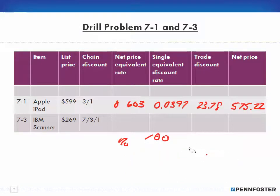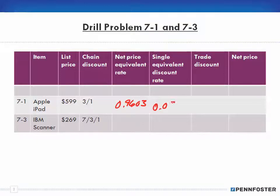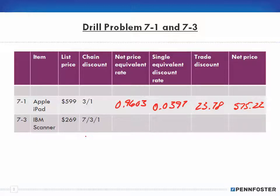I didn't want to erase those values, but that's okay — I'll write them back in. That was 0.9603, 0.0397, twenty-three dollars and seventy-eight cents, and the net price was five hundred seventy-five dollars and twenty-two cents. Go back and watch the other video for more in-depth explanation; I'm just going to work through this one.